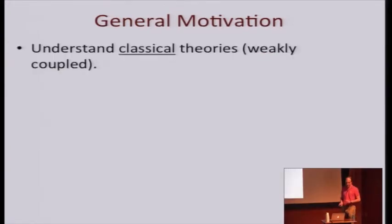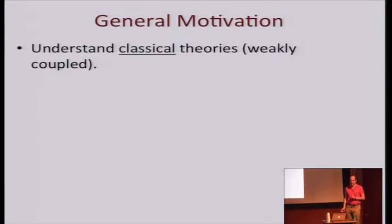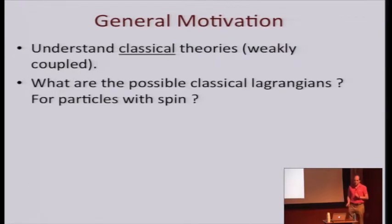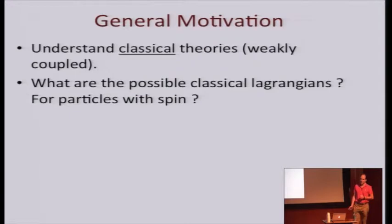I'd like to point out some problems and issues. One question we would like to understand is classical field theories — by classical I mean weakly coupled field theories that we then quantize with a very small coupling. The question is what are the possible Lagrangians, the possible classical equations and classical action for these theories? This problem for particles with spin is quite non-trivial.